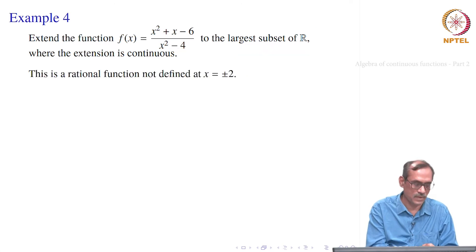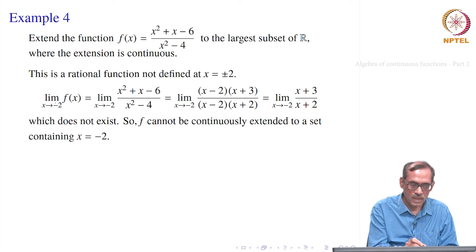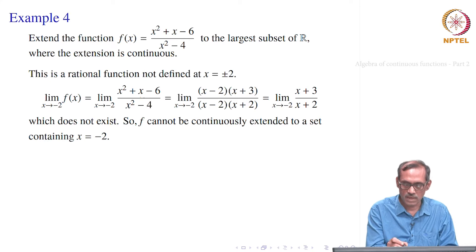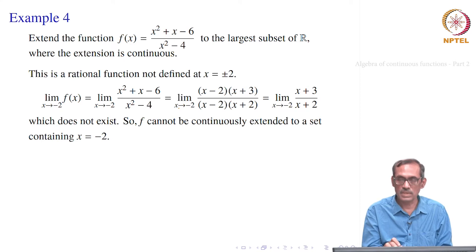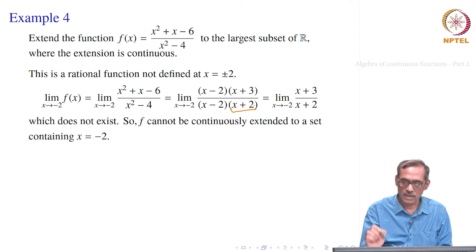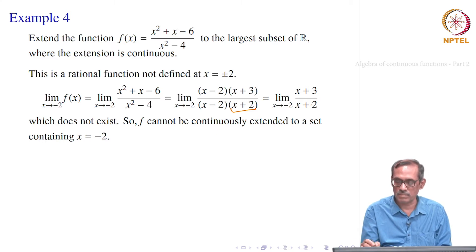Let us see what we can do. This is a rational function not defined at x = ±2, and we want to find its limit. Let us take first the limit at x = -2. The limit is (x² + x - 6) / (x² - 4) as x → -2. We can factorize: the numerator is (x - 2)(x + 3) and the denominator is (x - 2)(x + 2). Since x is not equal to -2 in the limit, we can cancel (x - 2) and get the limit of (x + 3) / (x + 2) as x → -2.